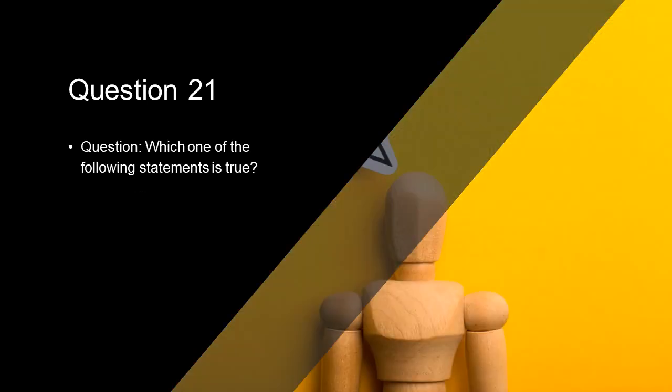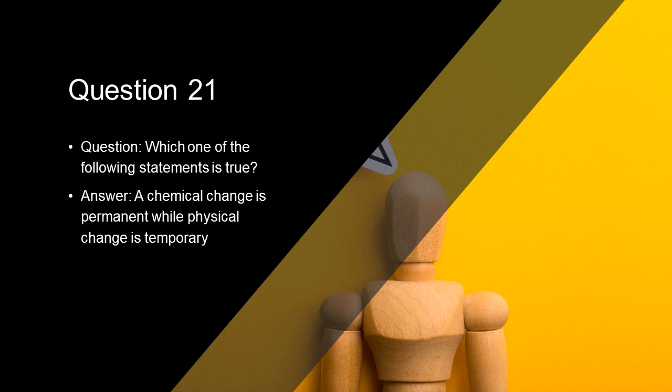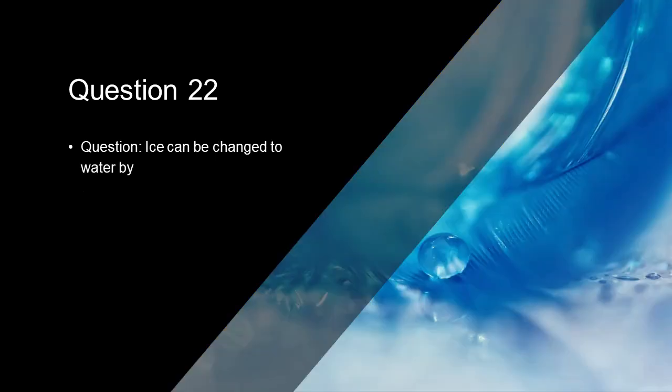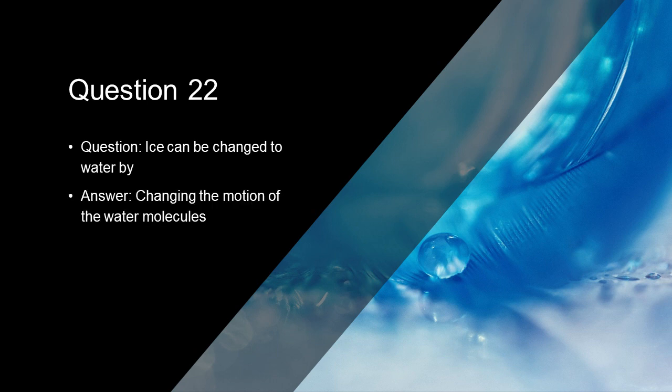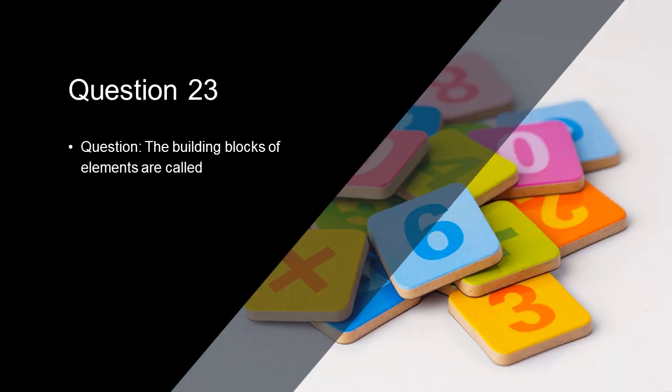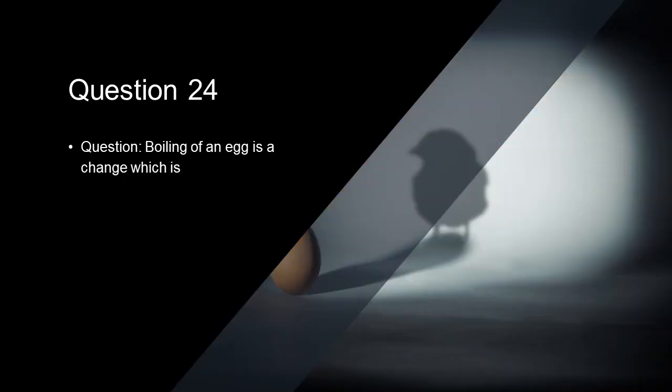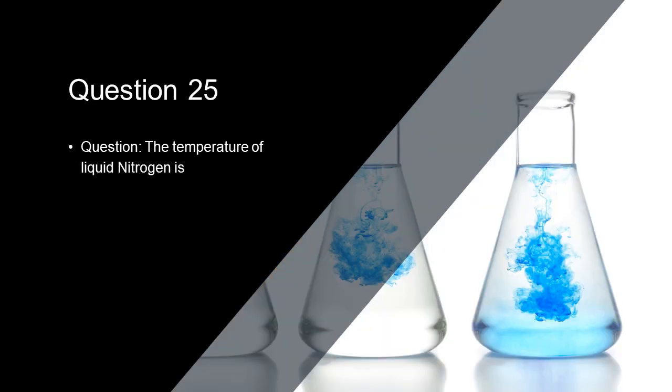Which of the following statements is true? A chemical change is permanent while physical change is temporary. Ice can be changed to water by changing the motion of the water molecules. The building blocks of elements are called atoms. Boiling of an egg is a chemical change. The temperature of liquid nitrogen is minus 196 degrees centigrade.